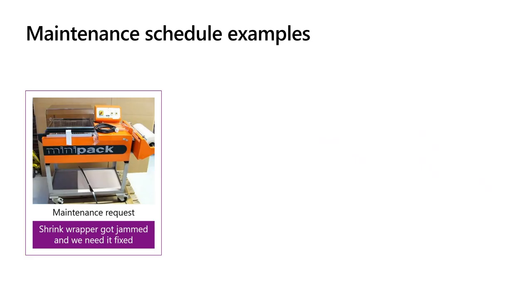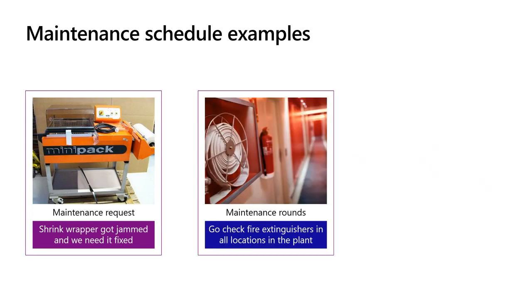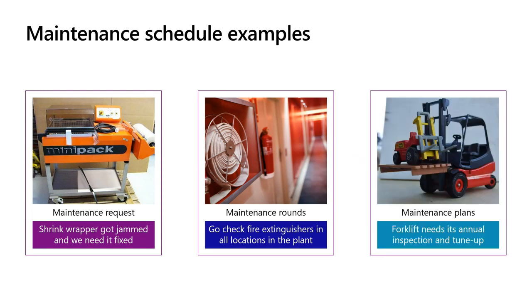Let's talk about some examples of the three components. One example for a maintenance request would be if a shrink wrapper was jammed and needed to be fixed — a production employee may submit a maintenance request so a maintenance supervisor can create a work order to fix it. An example of a maintenance round would be periodically checking that all the fire extinguishers are properly functioning in the plant. And a maintenance plan would be used in the case where we have a forklift which needs to have an inspection driven on an annual basis to have its servicing and tune-up executed.